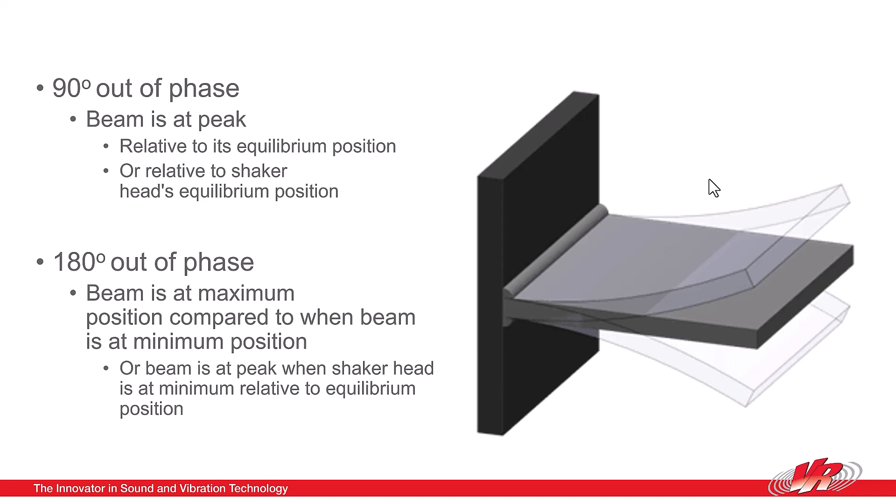If we were comparing the end of the beam at one moment compared to another moment, once where it's at its peak and one where it's at its minimum, we would say the peak to the trough is 180 degrees out of phase.